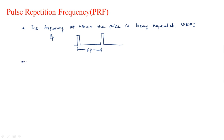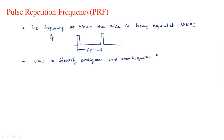Pulse Repetition Frequency has a significant impact on the identification of ambiguous and unambiguous targets. It is used to identify ambiguous and unambiguous targets. Before going into that identification, let me first explain what is an ambiguous target and what do you mean by an unambiguous target.